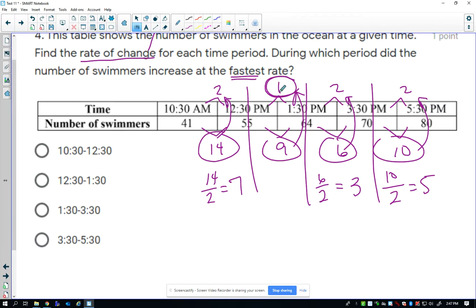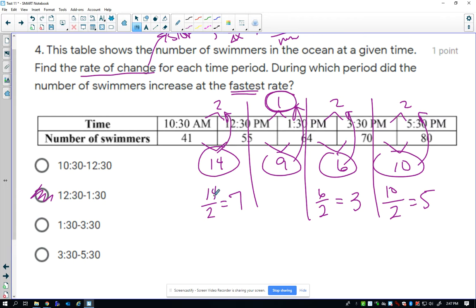So, the fastest one would have been 12:30 to 1:30. The reason I did 14 over 2, 9 over 1, and so on.